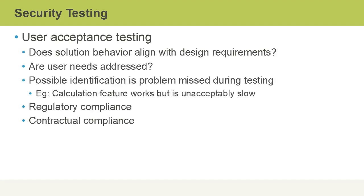Despite our best technical efforts to secure an application — and it's very important that we do this — in the end, user acceptance testing is what really solidifies our solution as being usable. Does the solution behavior align with design requirements, and are user needs addressed with our solution? We might identify problems that were missed during testing, brought about by end-user testing. For example, we might have a calculation feature in a web app that does work, but is unacceptably slow. We also have to think about regulatory and contractual compliance to make sure that the solution aligns with those. Yet another aspect of managing vulnerabilities is during company mergers and acquisitions, where we can assign different sensitivity levels to data so that we can control authorized access to that data.